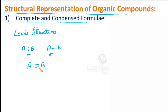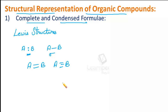Similarly, two dashes indicates the formation of a double bond and three dashes indicates the formation of a triple bond. For organic compounds, it is not necessary to represent the lone pair — it is optional. If we want, we can represent the lone pair of electrons, otherwise not. This entire structure is called the complete structural formula.